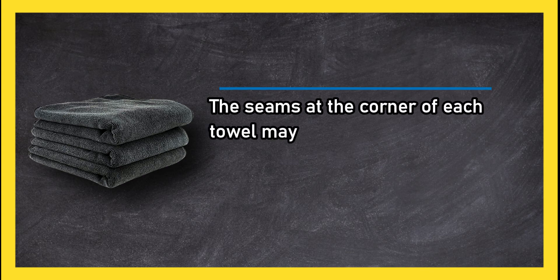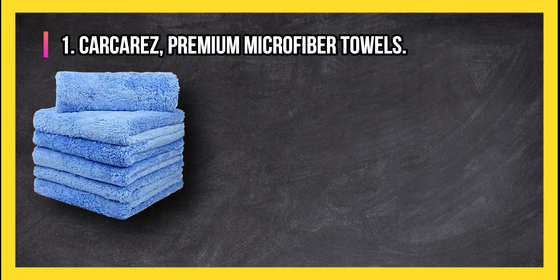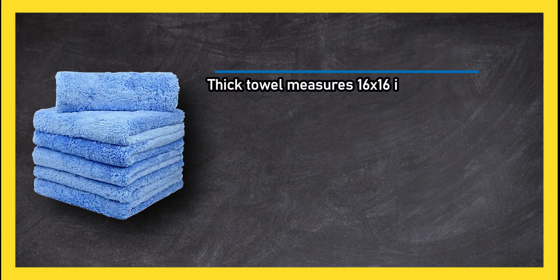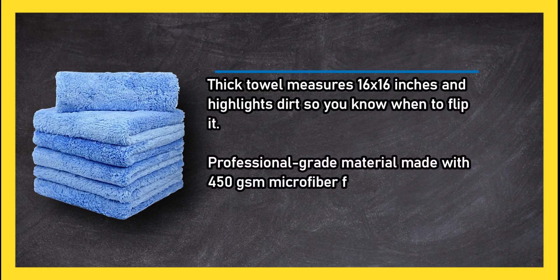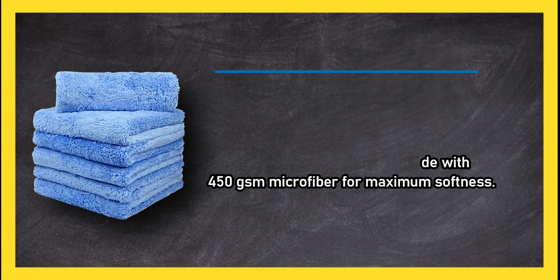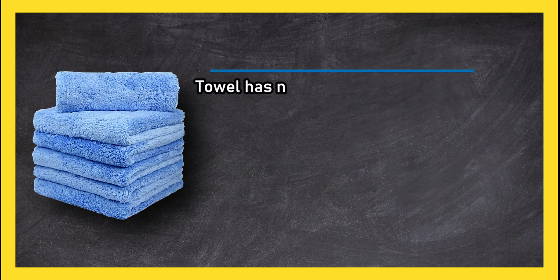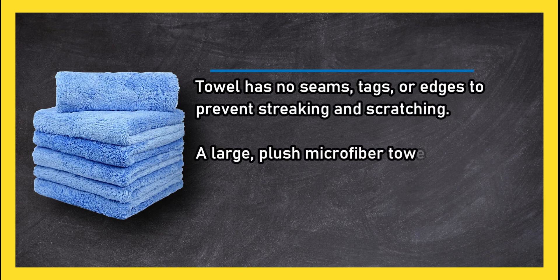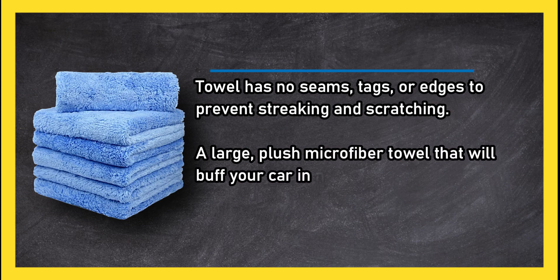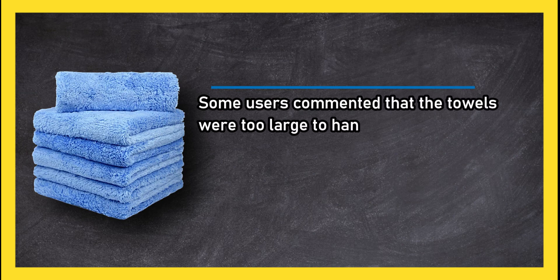At number one, Car Carers Premium Microfiber Towels. This thick towel measures 16 by 16 inches and highlights dirt so you know when to flip it. Professional grade material made with 450 GSM microfiber for maximum softness. The towel has no seams, tags, or edges to prevent streaking and scratching. A large plush microfiber towel that will buff your car in no time. Some users commented that the towels were too large to handle fine details properly.